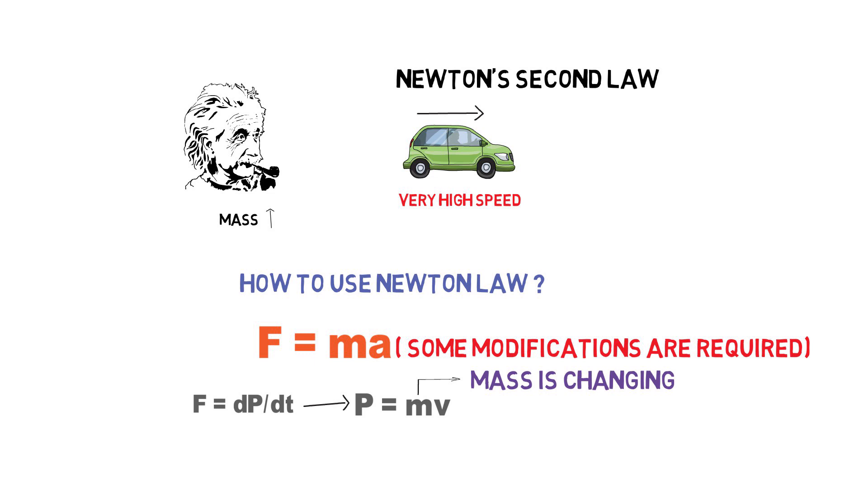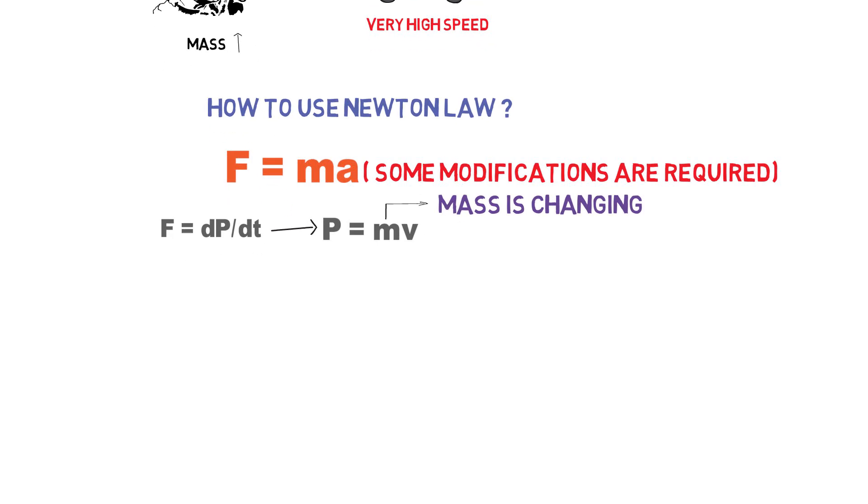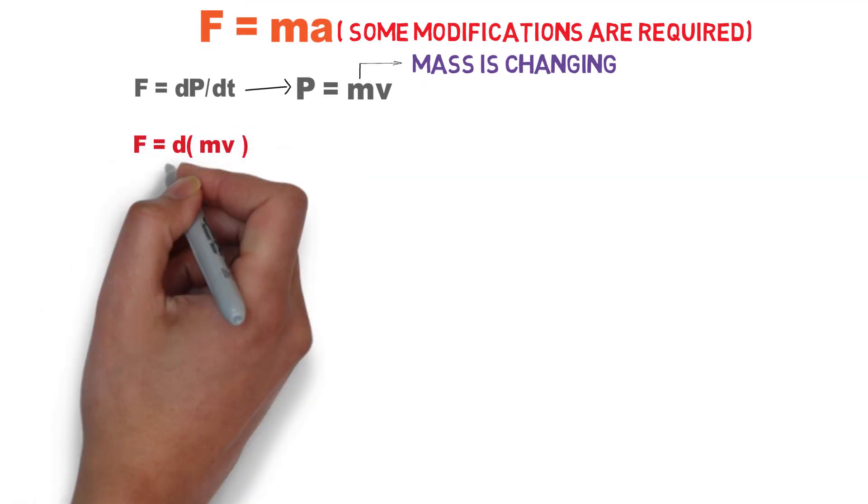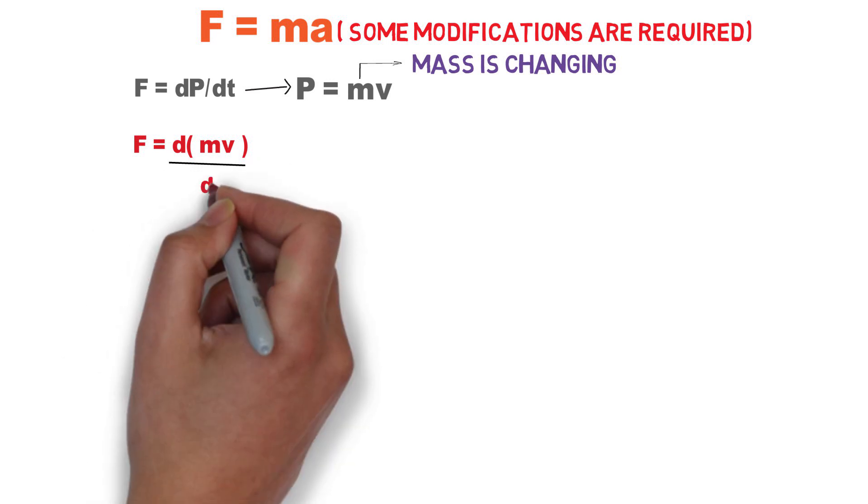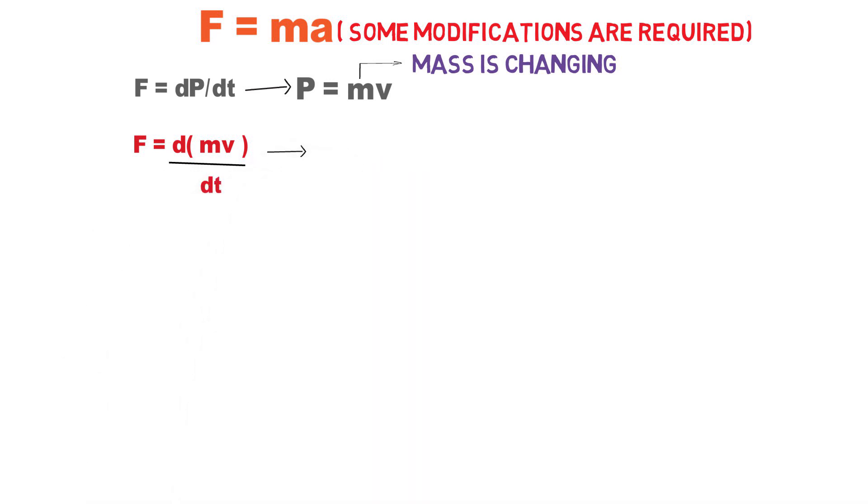Let's go to the derivation of the equation for mass changing. Now, apply the product rule of differentiation on change in mass and velocity divided by change in time.